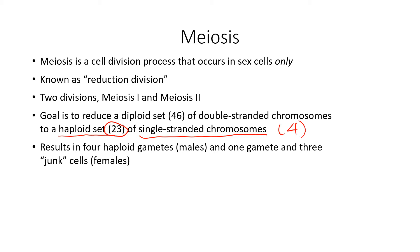The cells that we make are gametes — sex cells. We have four haploid sperm in males, and in females we end up making one egg and three junk cells. We'll talk more about why there's a slight difference there when we get to the female reproductive physiology video.